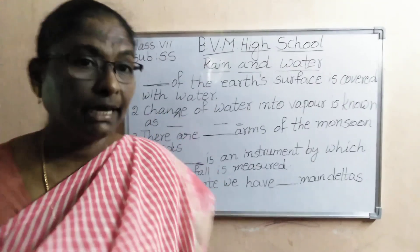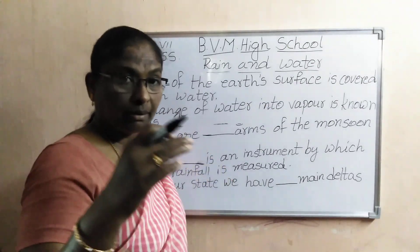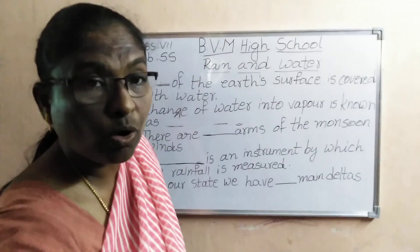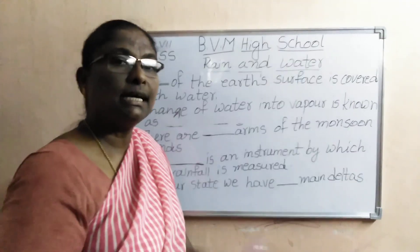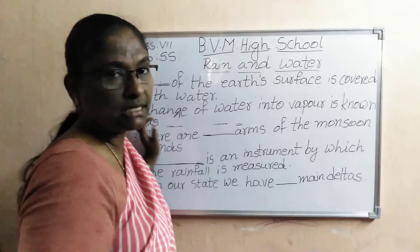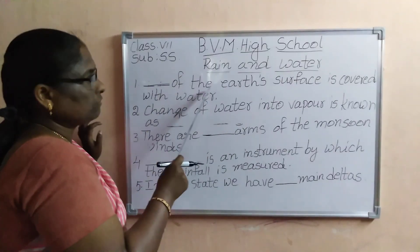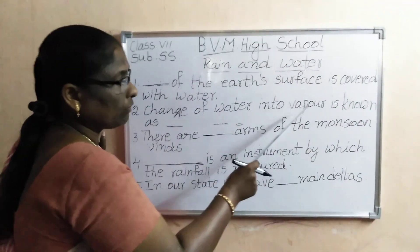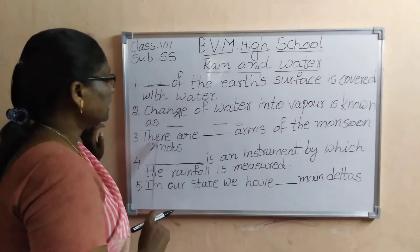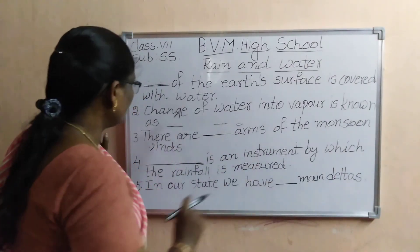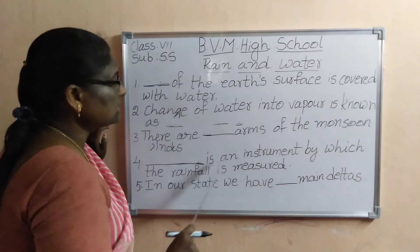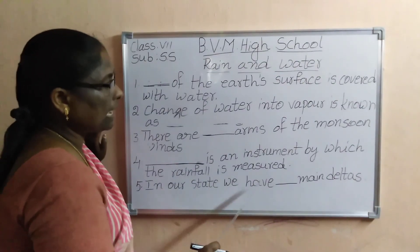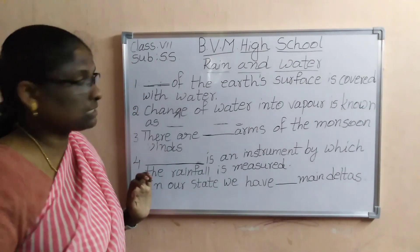Now again I am giving you another worksheet — that is Rain and Water. Now I will read all the blanks; read yourself also so that you can get answers. First one: dash of the earth surface is covered with water. Change of water into vapor is known as dash. There are dash forms of the monsoon winds. Dash is an instrument by which the rainfall is measured. In our state we have dash main deltas.